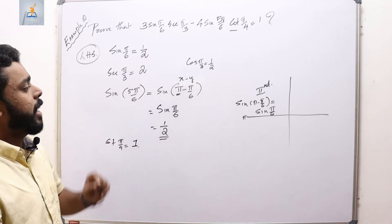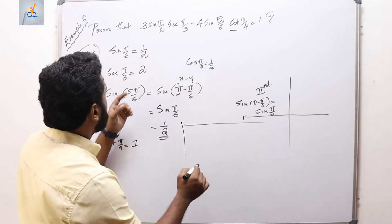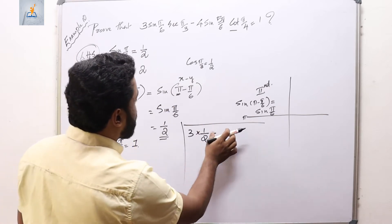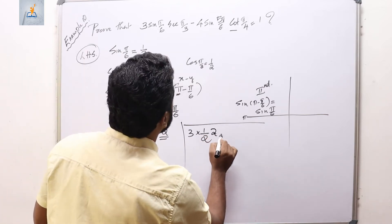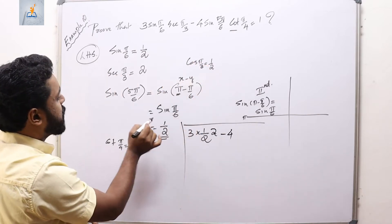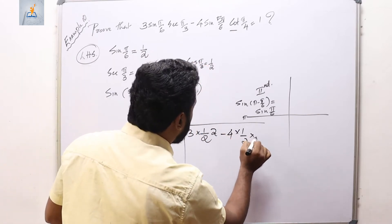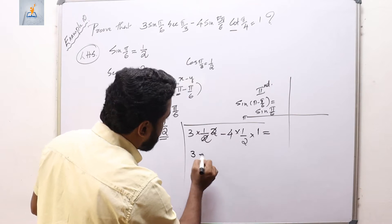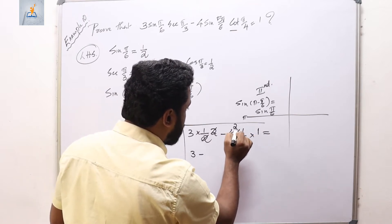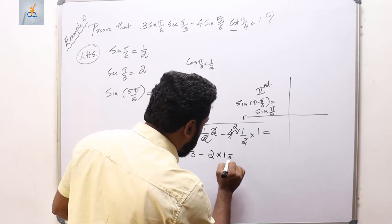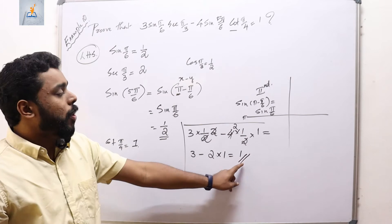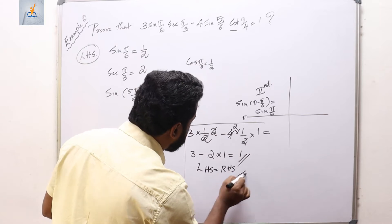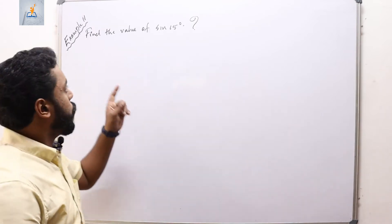Substituting all terms: 3 × (1/2) × 2 − 4 × (1/2) × 1 = 3 − 2 = 1. The left-hand side equals 1, which is the right-hand side. Hence LHS = RHS and the result is proved. Example 11: find the value of sin(15°).